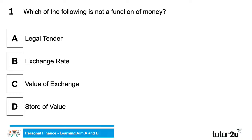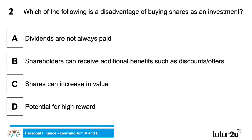We've got Connor thinking it's A, Joyce going for B. Chris, can you give us the answer please? The right answer is B — exchange rate. The functions of money are legal tender, value of exchange, and store of value, so exchange rate is not a function of money.